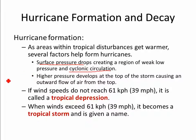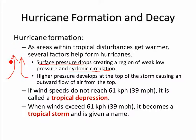A low pressure system means we have rising air, which leads to cloud development and precipitation. Up at the top, because all that air is piling up, you do have high pressure, but you need divergence aloft to maintain and support that low pressure system.